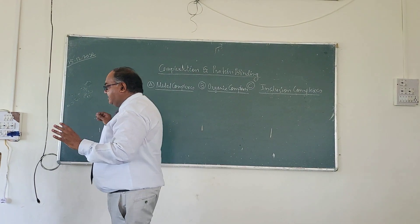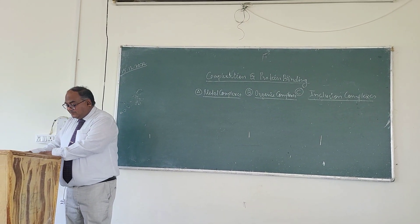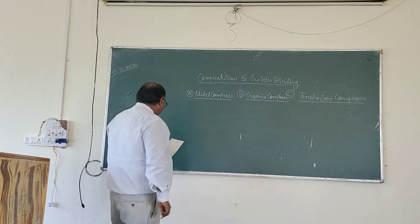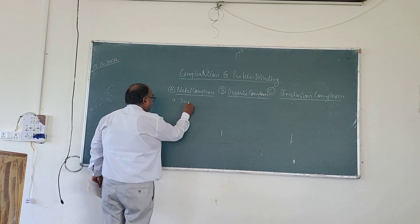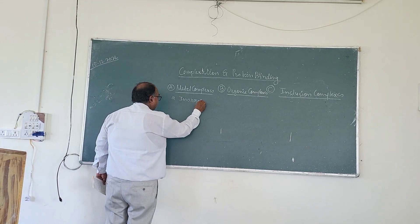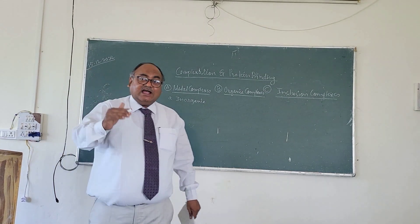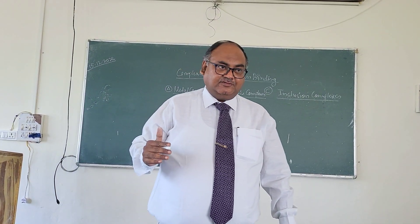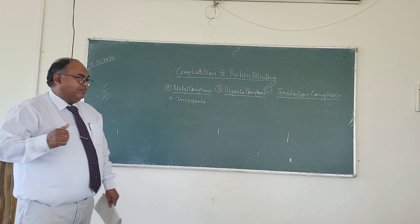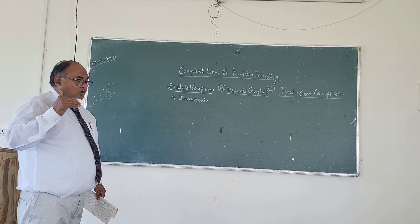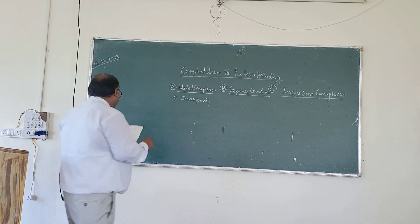Likewise, we classify the subclasses of the complexes. The first type, which we call as the metal complexes, we subclassify them as inorganic complexes. These subtypes of metal complexes are based on the donor species that is involved. The first type is the inorganic type of metal complexes, in which the inorganic ions or molecules act as the donors of lone pairs of electrons.